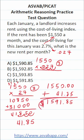So you can see the new rent after it's adjusted for the cost of living index. It's going to be $1,591.85, which is answer choice D in this case.